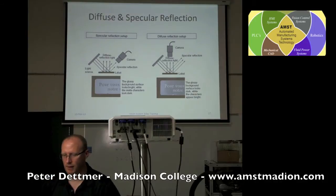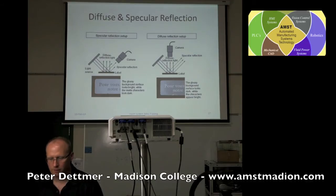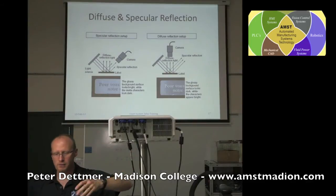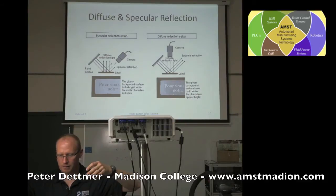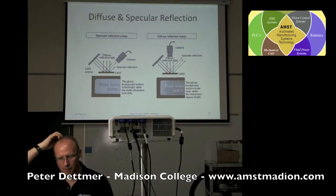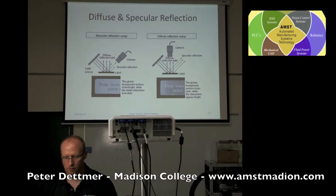We also have diffuse and specular lighting. You can see some examples here. The diffuse light comes from an angle, and we pick up with the camera from an angle. In this example, the glossy background surface looks bright, while the characters are matte or look dark.